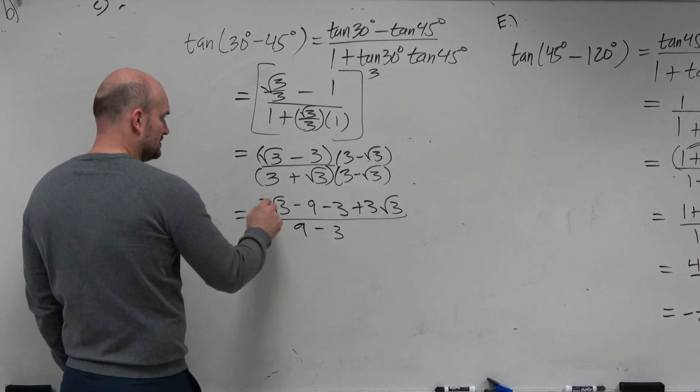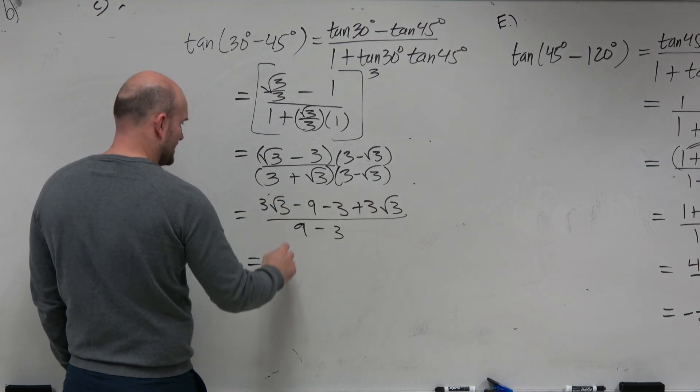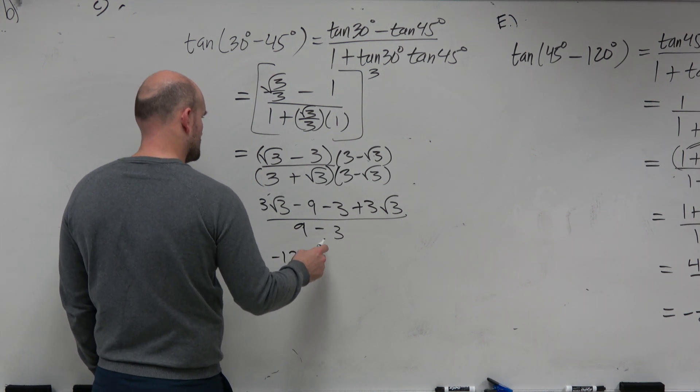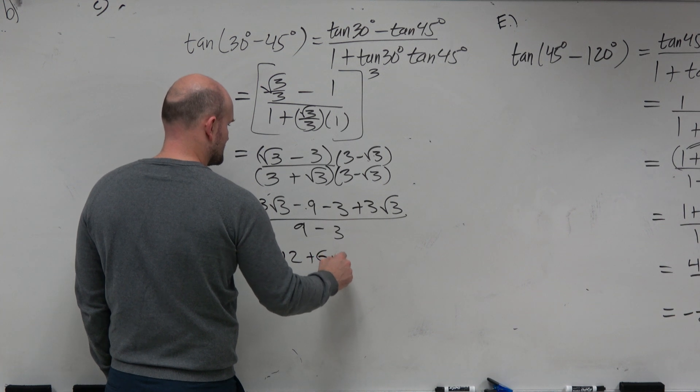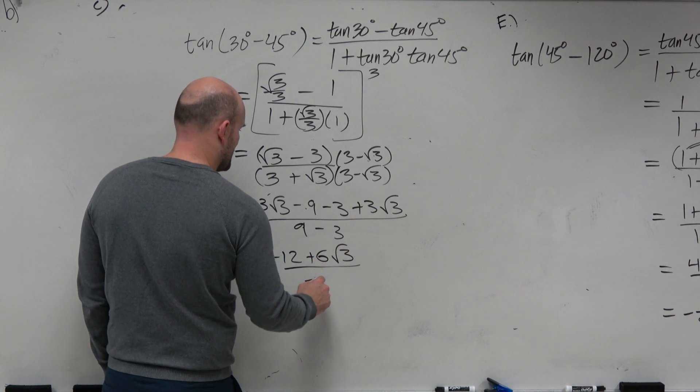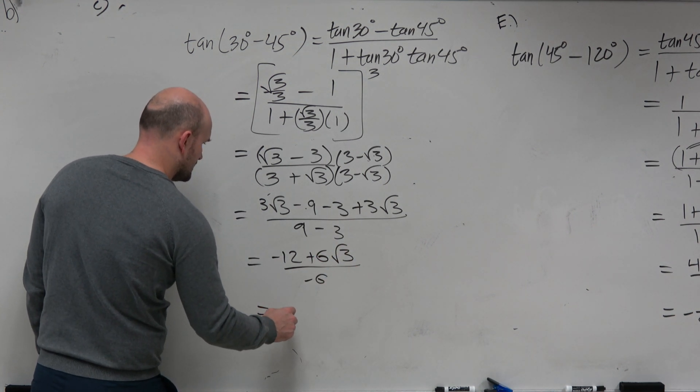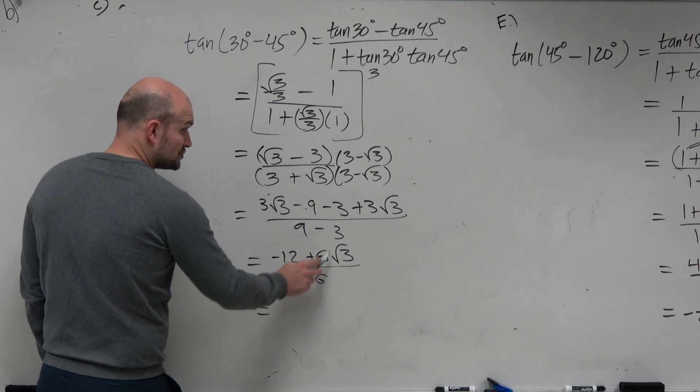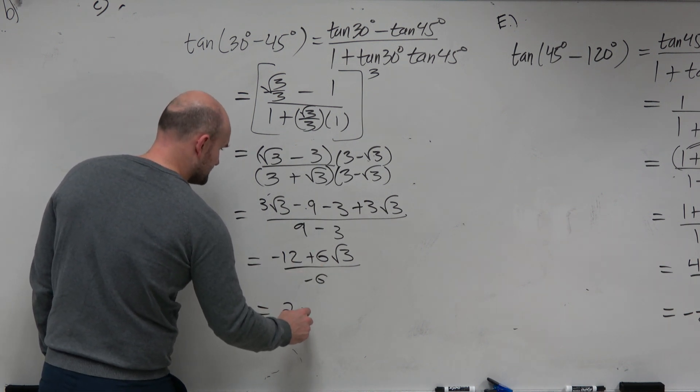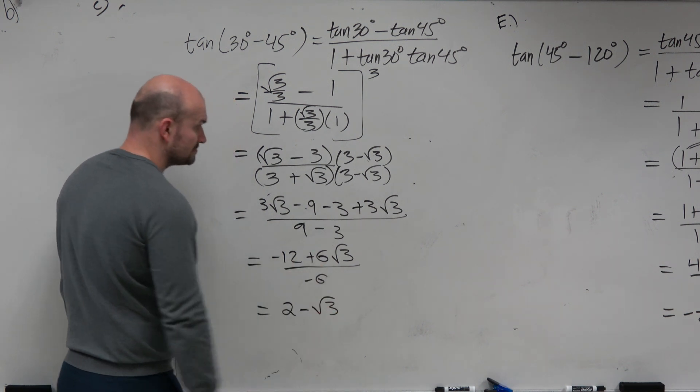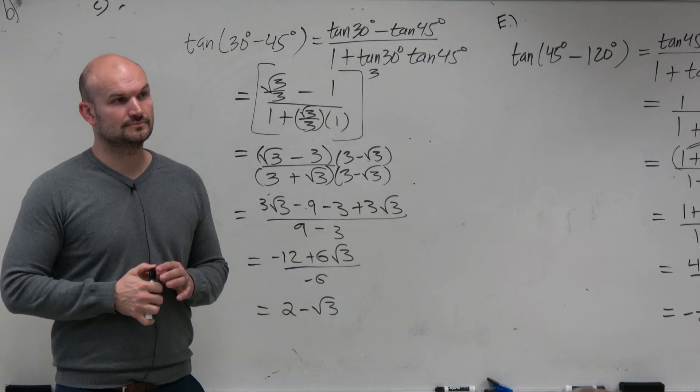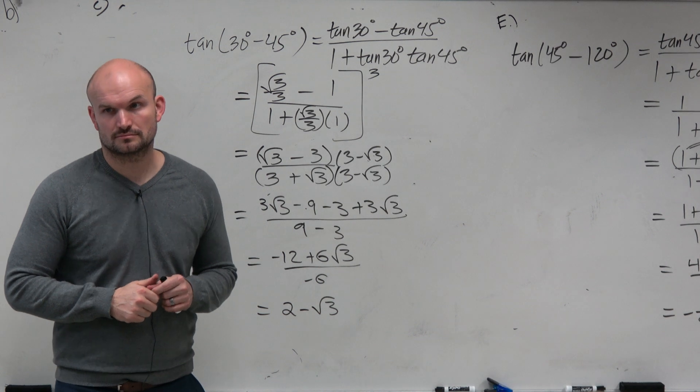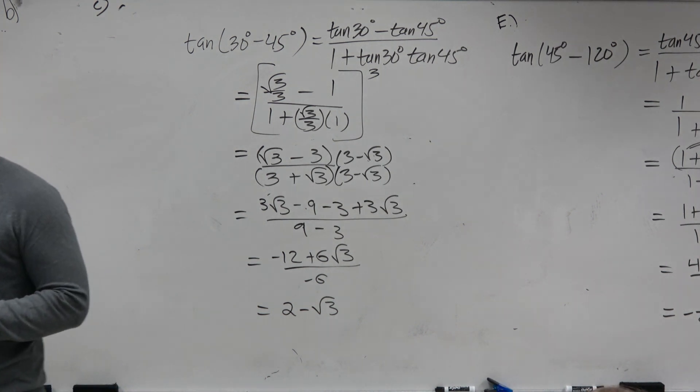So let's simplify everything. These are both positives, so they can combine. This gives you a negative 12, right? Negative 12 plus 6 square root of 3 divided by negative 6. Divide the negative 6, distribute that into both of them, you get a positive 2 minus the square root of 3. Cool? Kind of?